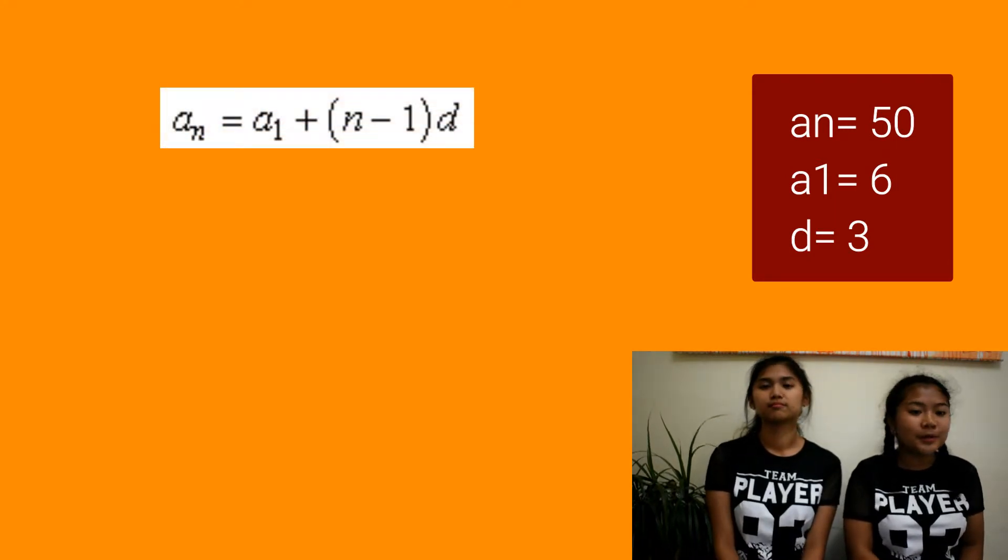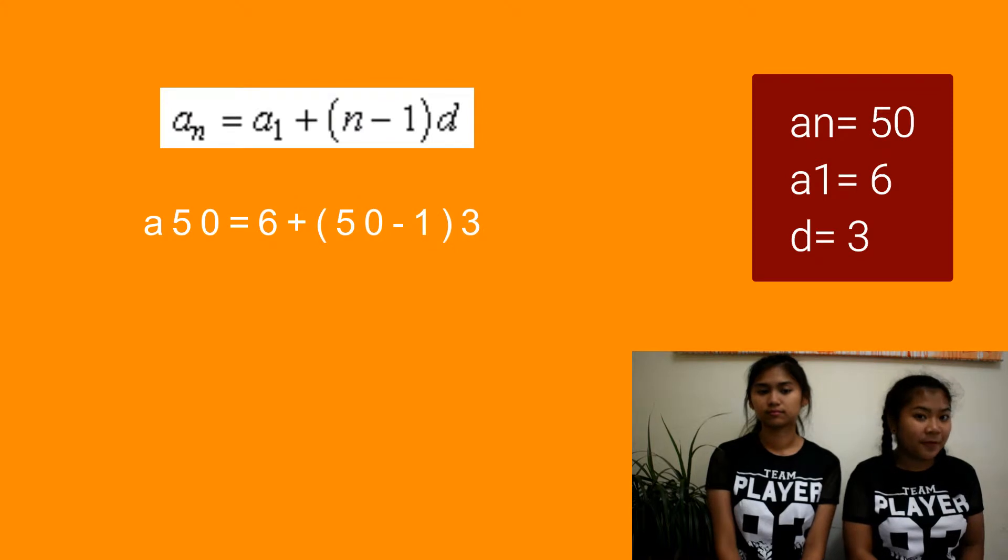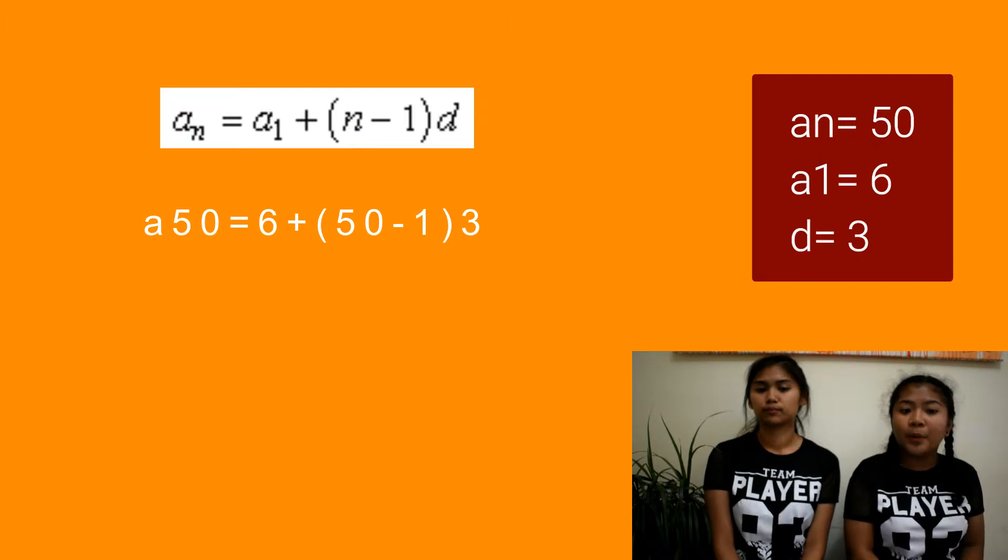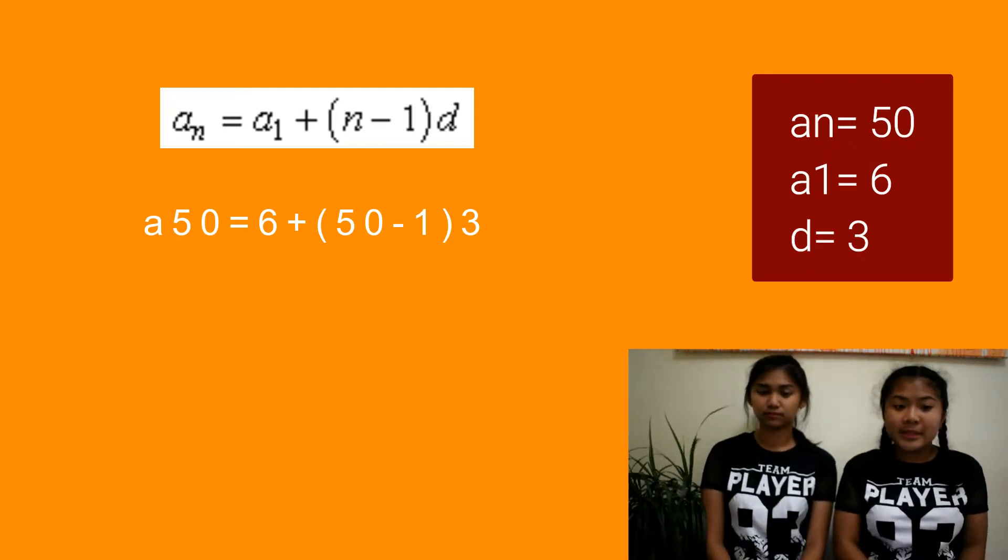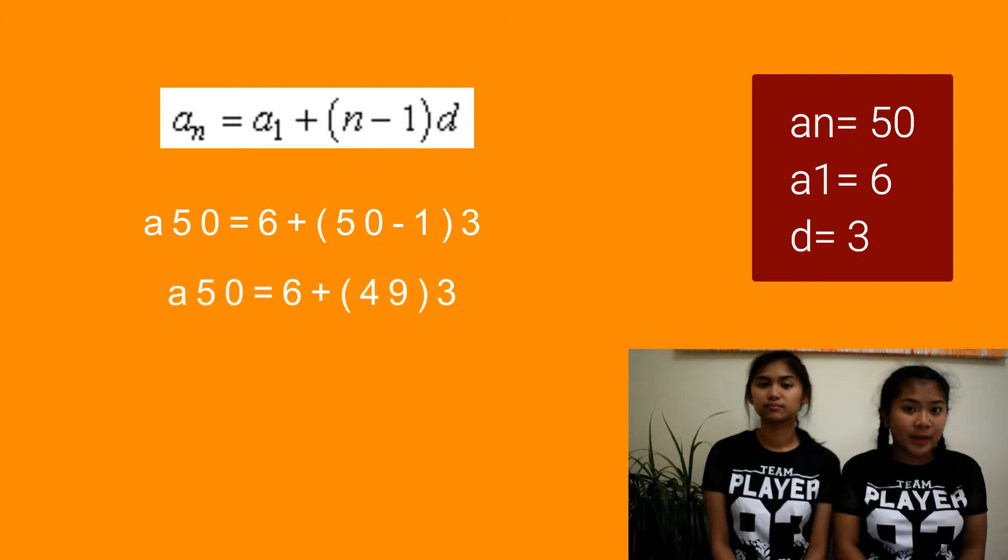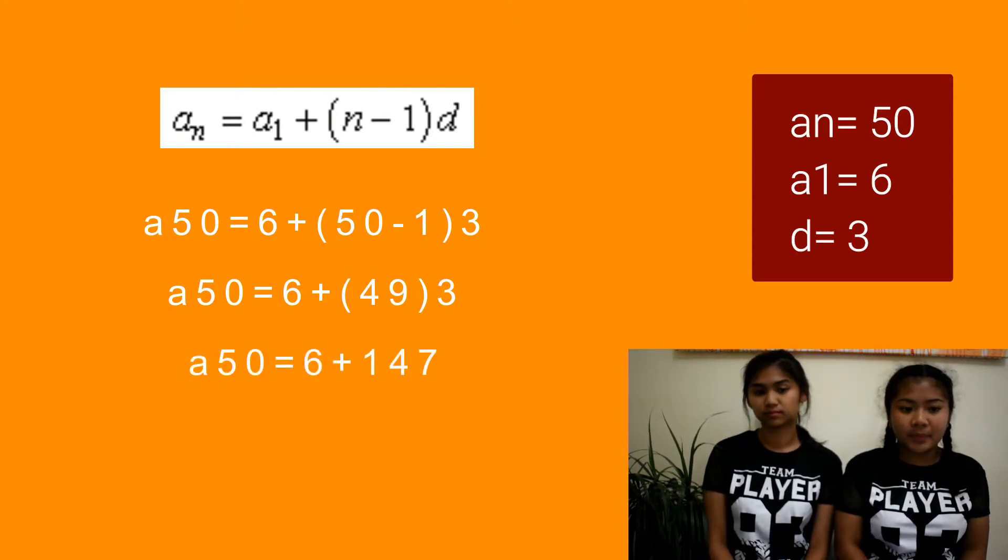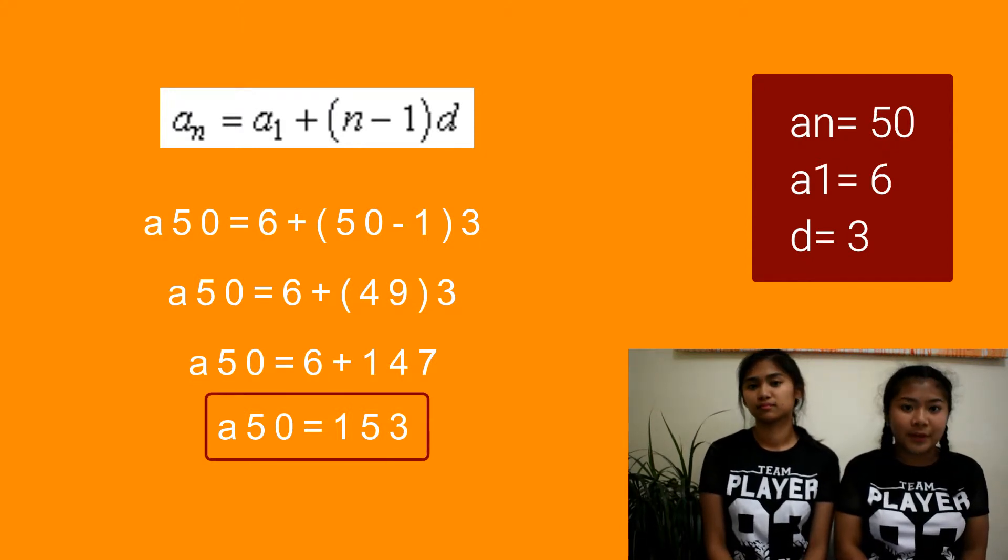A sub n is equal to A sub 1 plus quantity of n minus 1 multiplied by d. For instance, A sub 50 is equal to 6 plus quantity of 50 minus 1 multiplied by 3. First, we're gonna subtract 50 and 1. Then, multiply it by 3. Then, add 6. And now, our 50th term is 153.